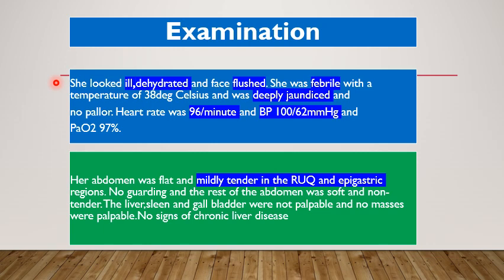On examination, she looked ill, was dehydrated and face flushed. She was febrile with a temperature of 38 degrees Celsius and deeply jaundiced but no pallor. Heart rate was 96 per minute, BP 100 over 62 mmHg, and partial arterial oxygen saturation was 97% on room air. Her abdomen was flat and mildly tender in the right upper quadrant and epigastric regions. There was no guarding, the rest of the abdomen was soft and non-tender. The liver, spleen, and gallbladder were not palpable, no masses palpable, and no signs of chronic liver disease were evident.